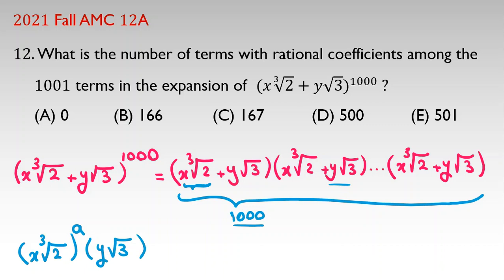Look here, we have 1000 terms. If, for example, we select only 1, x times cube root of 2, the other terms, we should select y times square root of 3.